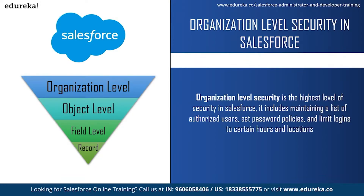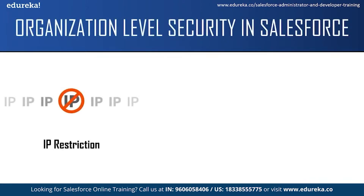Organization level security lets you decide when and from where your users can access the system. It secures data from unauthorized users. Important features include restriction of IP addresses, password policies and login access. With IP restriction, you can allow certain users or employees to log in from a set of IP addresses. Using trusted IP ranges, you can limit users' ability to log in only when they are in the office. If they attempt to log in from outside the trusted ranges, they might be asked for two-factor authentication, requiring a code sent to their mobile device.